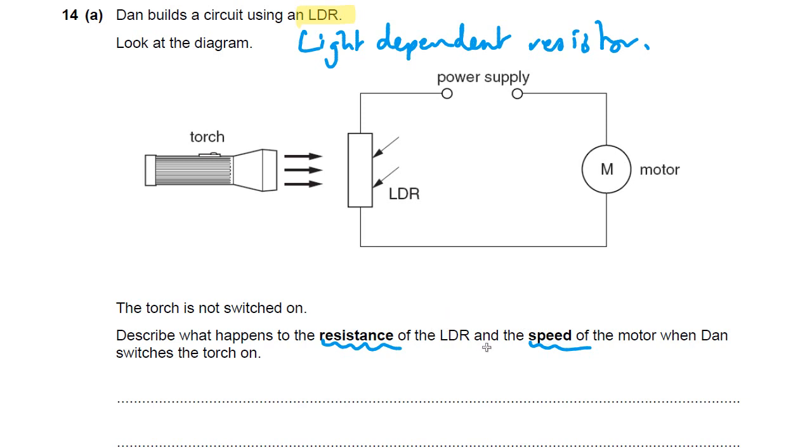So this is a two mark question. You probably guessed. Firstly, one mark for the resistance and the next mark for the speed. Just pause. Just try and remember which way does resistance change with light. Does higher light make a resistance higher or does higher light make the resistance lower? And then once you've got that change in resistance, what's going to happen to the speed of the motor?